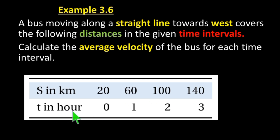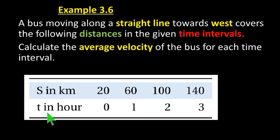The corresponding times in hours are: 0 hours, 1 hour, 2 hours, and 3 hours. Calculate the average velocity of the bus for each time interval.